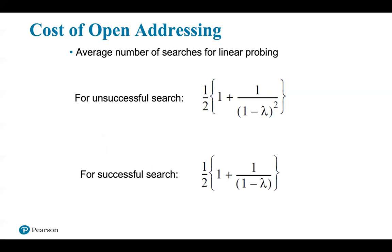Let's talk about the cost of open addressing. All open addressing schemes use one element of the hash table per entry in the dictionary. The dictionary operations getValue, remove, and add each require a search of the probe sequence indicated by both the search key and the collision resolution scheme. We will state the number of comparisons necessary to locate a search key in terms of the load factor lambda. Open addressing lambda ranges from 0 when the table is empty to 1 when it is full.